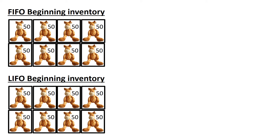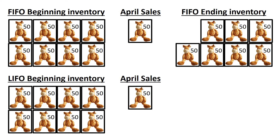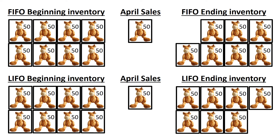The first box of toy giraffes, 50 units, is sold in April. With FIFO — first in, first out — we assume that the oldest inventory gets sold first: one of the boxes purchased in January. With LIFO — last in, first out — we assume that the newest inventory gets sold first: one of the boxes purchased in March.